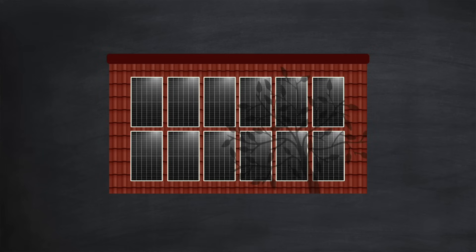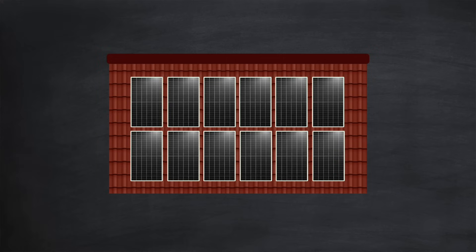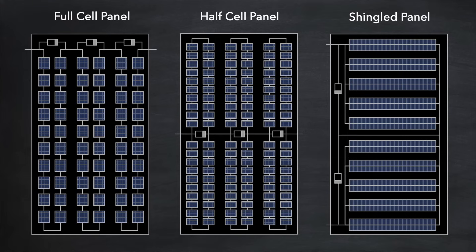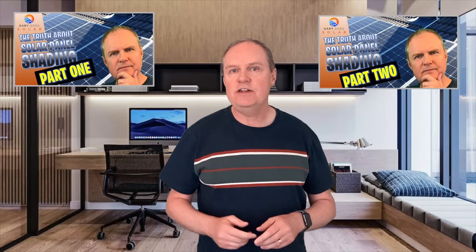So as we've seen, for certain types of partial shading like diffuse shading from a tree, optimizers can marginally improve your array performance. Optimizers can also improve performance if your array experiences shading from a TV antenna or a service cable. But for hard shading, you're likely to find that optimizers perform little or no better than the solar panels can do themselves using their bypass diodes — and this is especially true if your panels are half-celled or shingled. If you'd like to find out more about how optimizers handle shading, I've made a two-part mini-series on the topic — the links are in the video description.